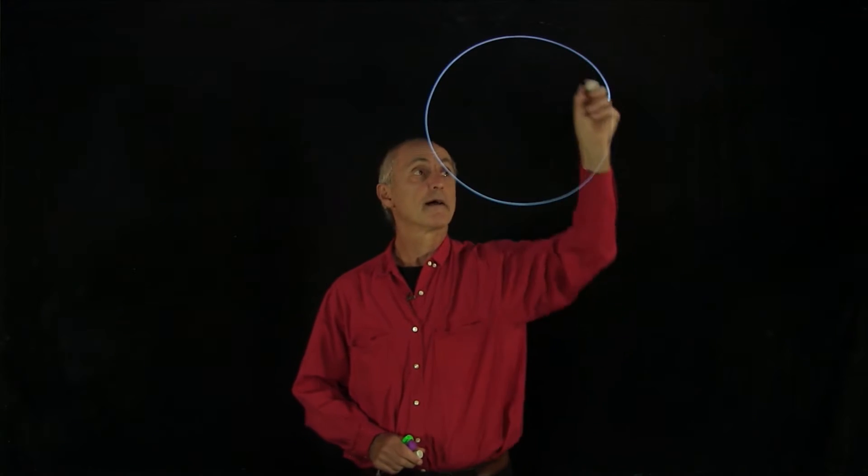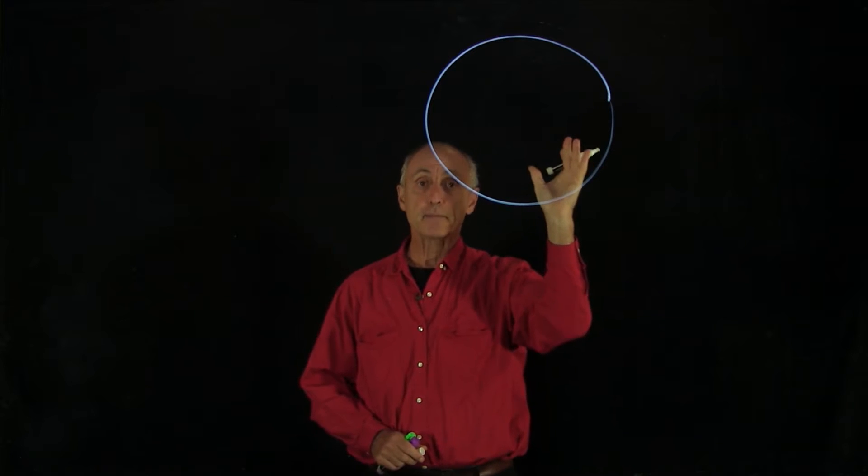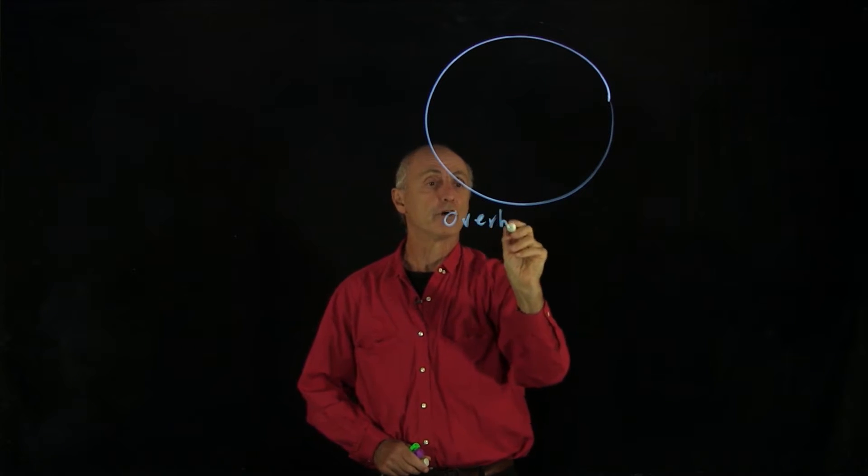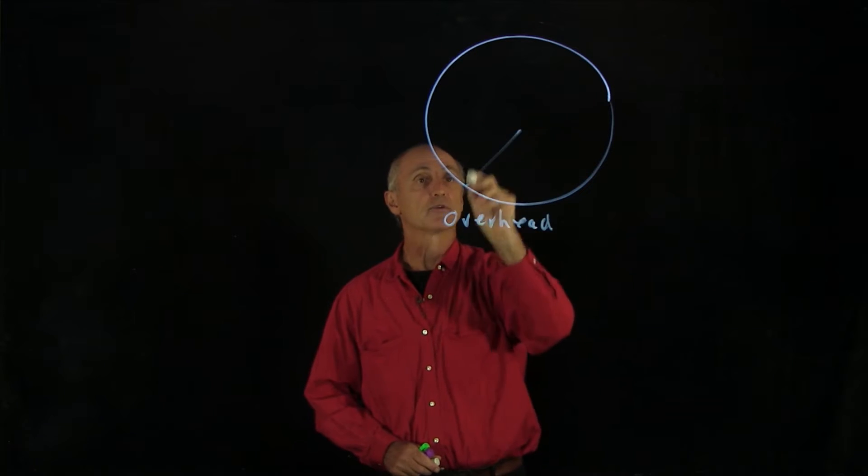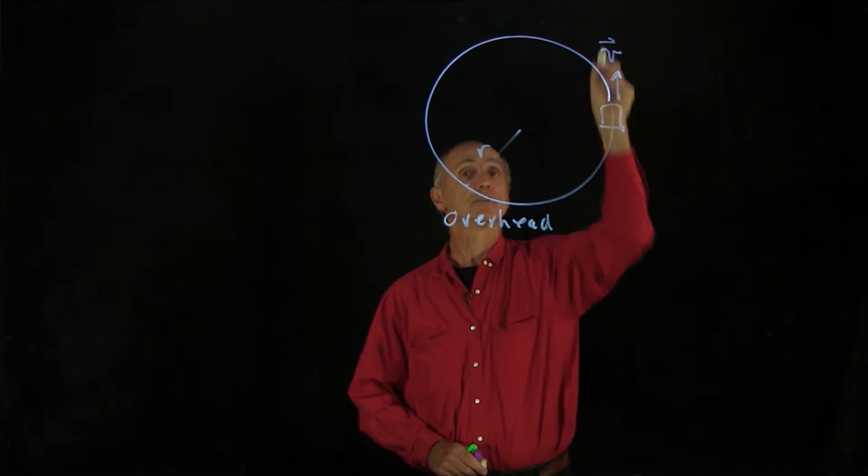Let's consider the motion of a car on a circular track. The track is frictionless and also banked. This is the overhead view of our circular track. It has a radius r, and here's our car moving at a constant velocity.